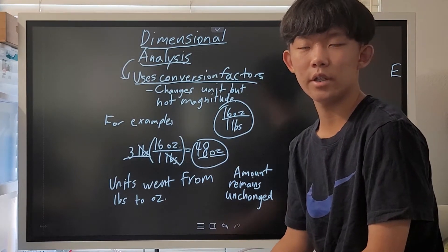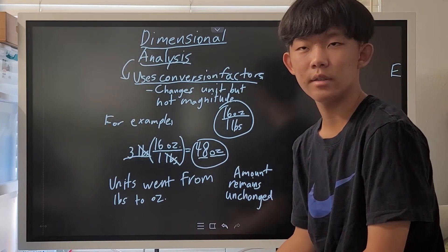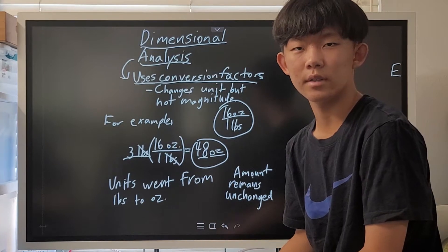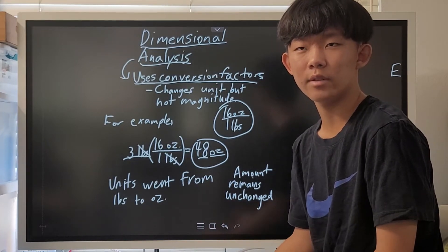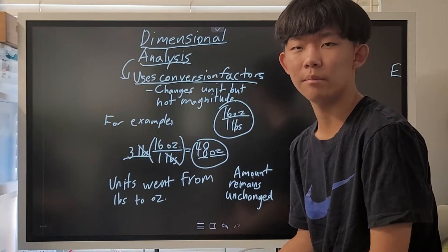Overall, the units changed from pounds to ounces, but the overall quantity did not change. If you have 3 pounds of sand and 48 ounces of sand, they're going to be about the same.